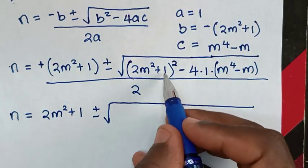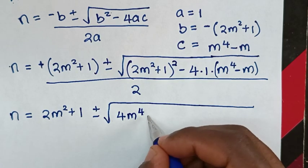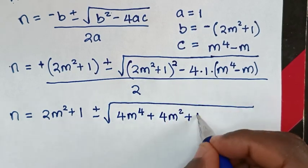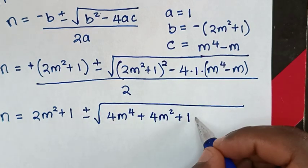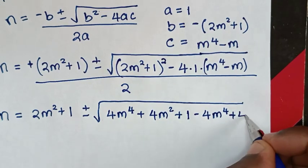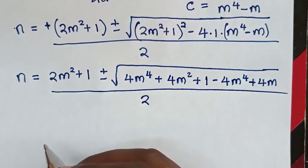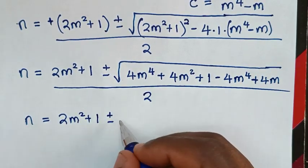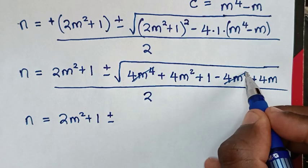Expanding (2m squared plus 1) squared gives 4m to the power 4 plus 4m squared plus 1. Then negative 4 times (m to the power 4 minus m) gives negative 4m to the power 4 plus 4m. Combining: 4m to the power 4 minus 4m to the power 4 cancels, leaving 4m squared plus 4m plus 1, over 2.